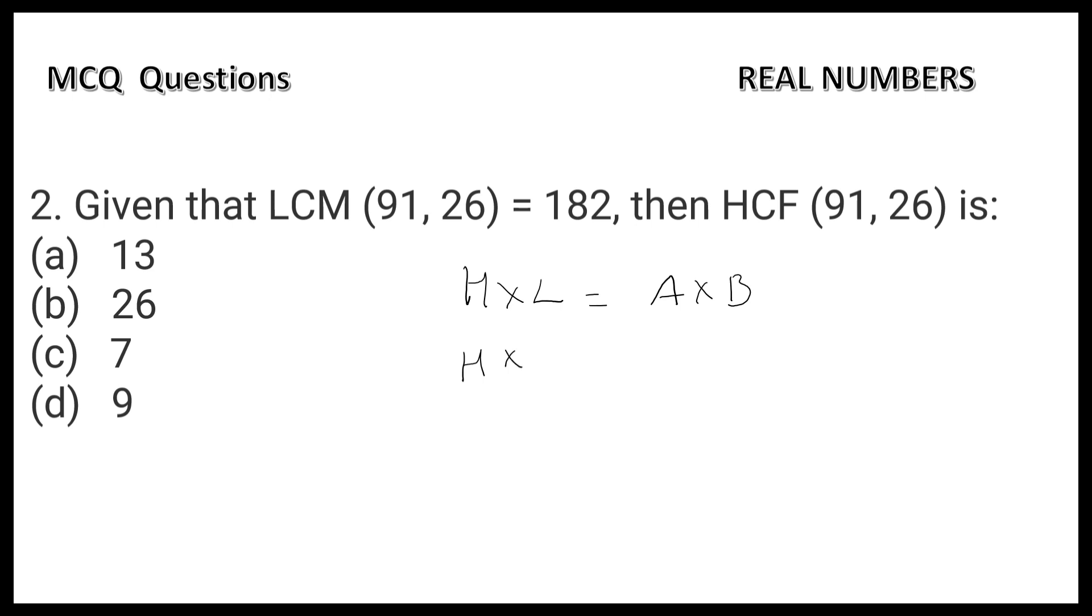Here LCM is 182. The numbers are 91 and 26. So HCF = (91 × 26) ÷ 182. Factorizing: 91 divided by 2 is... calculating the factors, we get HCF = 13. Option A is correct.